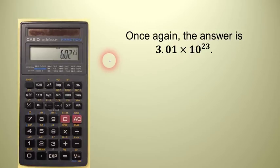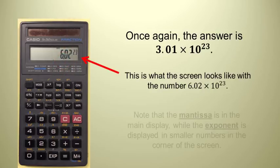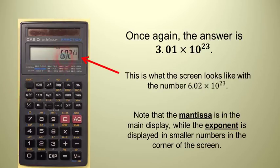Now, I want you to notice how 6.02 times 10 to the 23rd is expressed in your calculator, if you have one of these. They basically just put the mantissa, the 6.02, in the main part of the display and then the exponent in the little window. Make sure that you write it or that you understand that that's 6.02 times 10 to the 23rd.